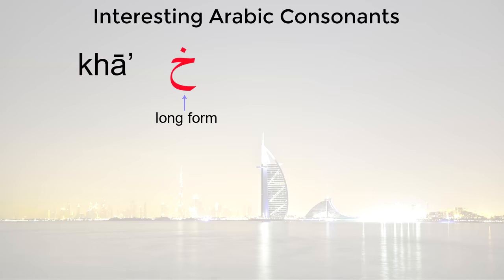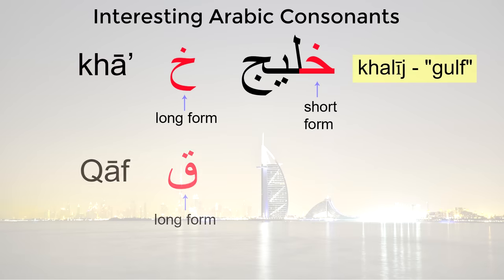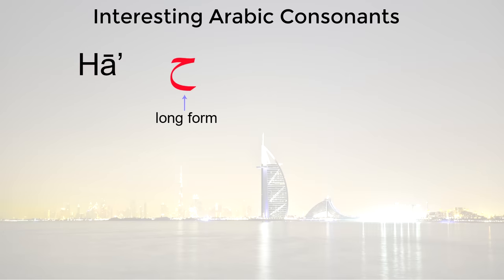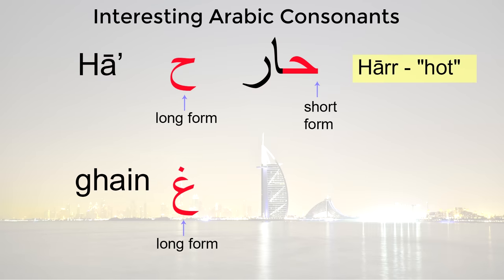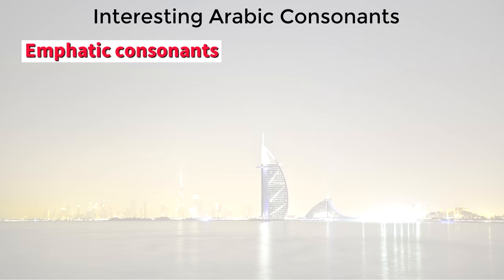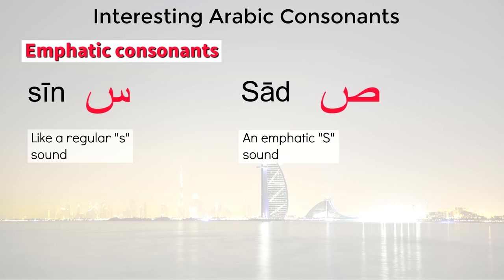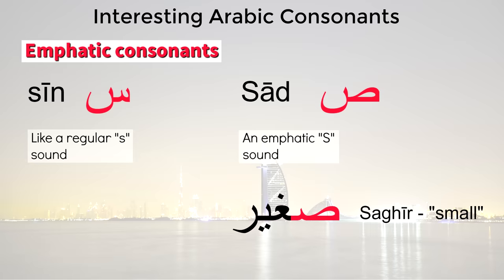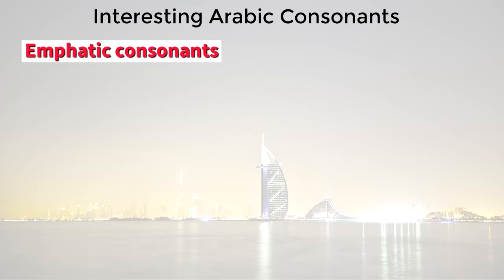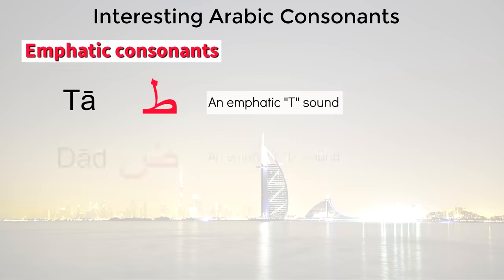Arabic has a number of consonant sounds which are surprising or challenging for speakers of many other languages. There's a sound as in the word meaning golf, and a sound like a K but pronounced further back in the throat, as in the word meaning pen. There's also a sound similar to the French R, as in the word meaning room. Arabic also has emphatic consonants: for example, sin is a regular S sound, while sad is an emphatic S, as in the word meaning small. To make the emphatic sound, you keep your tongue close to the roof of your mouth, position as if to say a K, and make an S sound instead. There are three other emphatic consonants: emphatic taw, dawd, and zaw.